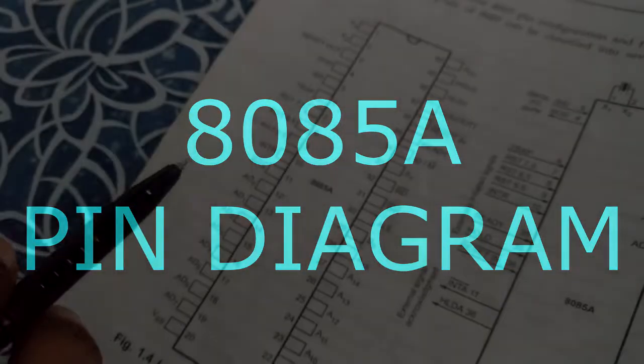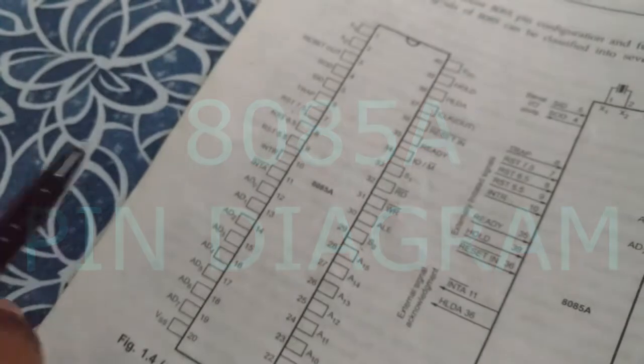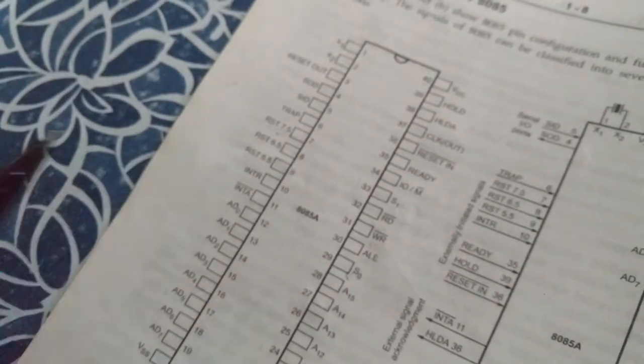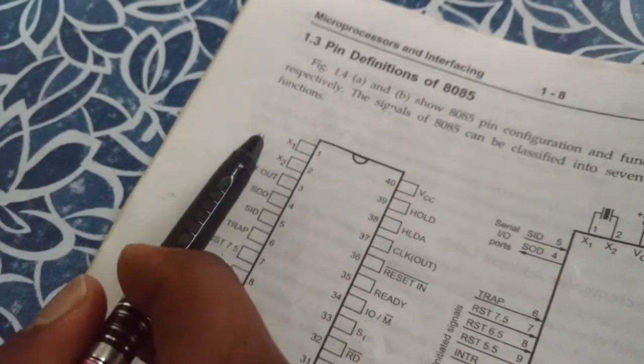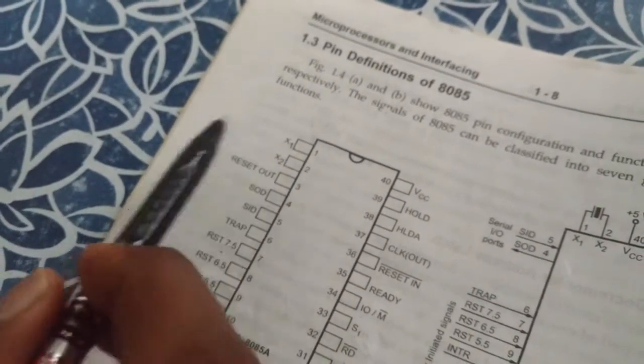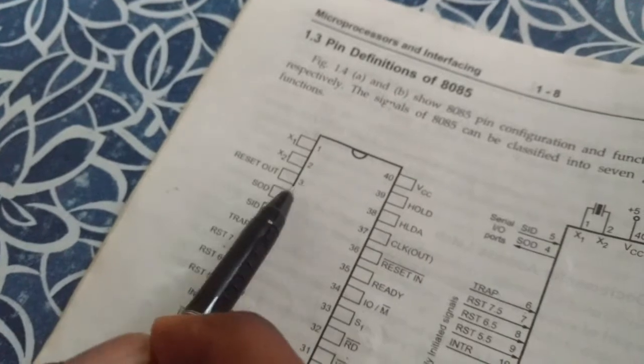Hi guys, today let's learn about the 8085 pin diagram in an easy manner. Here there are two pins, X1 and X2. So X1 is male and X2 is female, and they both decide to have babies, reset out.